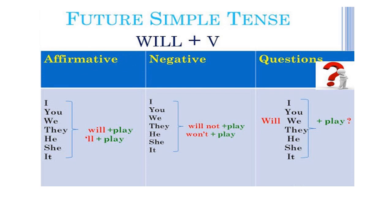Now look at this chart carefully. If we are in the classroom, we should draw this chart and fill it in by yourself. For the affirmative form, we have the subject pronouns I, you, we, they, he, she, it — plus 'will' or the contraction apostrophe-LL — plus the verb in the infinitive.